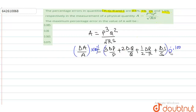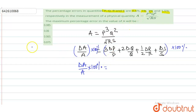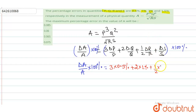Now we have the given values in percentage form, so we substitute to get our answer. We need to find the percentage error in A: Δa/a × 100% = 3 times the percentage error in p, which is 0.5%, plus 2 times the percentage error in q, which is 1%, plus half times the percentage error in r, which is 3%.